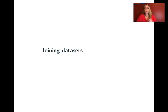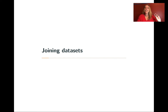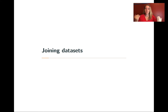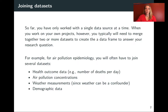One thing we're going to talk about today is joining data sets. One of the ways that data can be untidy is that you could have data on the same unit of observation but have it in two separate data frames or two separate data sources, and need to join those together into one data frame.